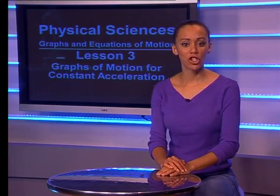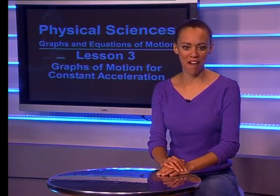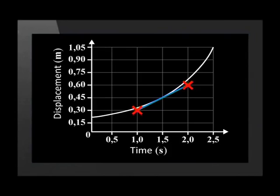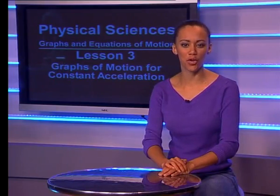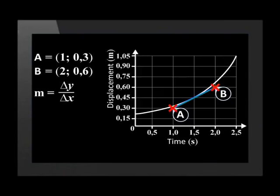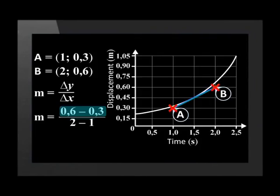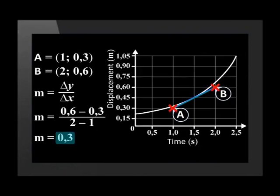Let's use the gradient of this tangent to work out the approximate velocity at 1.5 seconds. We mark off two points on the tangent. We read off the x and y values of each of these points. Point A has an x value of 1 and a y value of 0.3. And point B has an x value of 2 and a y value of 0.6. Now we use the equation for the gradient of a straight line. The gradient is calculated as the change in the y values divided by the change in x values. The gradient equals 0.6 minus 0.3 divided by 2 minus 1, which tells us that the gradient of the tangent to the graph at 1.5 seconds is approximately 0.3.